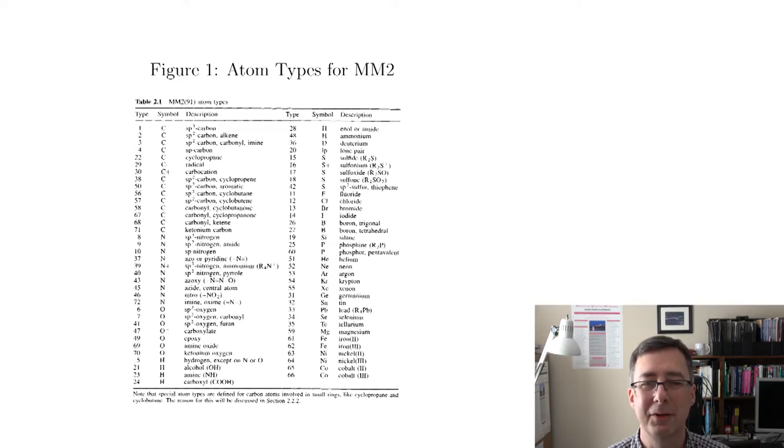So in one of the earlier molecular mechanics force fields called MM2, molecular mechanics version number two, there were a number of so-called atom types which basically just means what are the different chemical environments that an atom can be in that I need to worry about when I'm trying to catalog all these parameters like k2. So here's an example you see there's a bunch of different carbons. There's sp3 carbon, there's an sp2 carbon when it's an alkene, there's an sp2 carbon when it's a carbonyl or an imine, there's an sp carbon, etc., and there's quite a few examples.